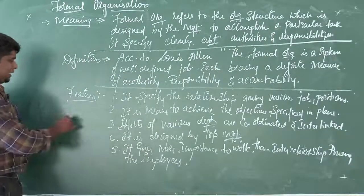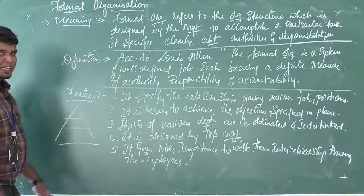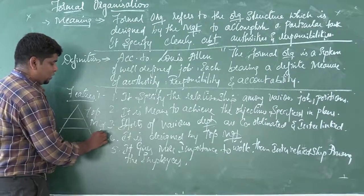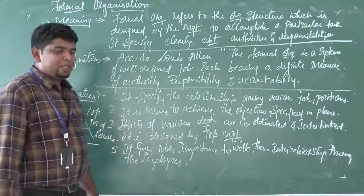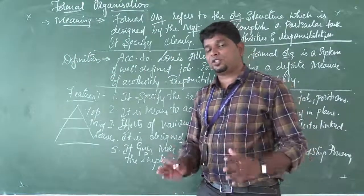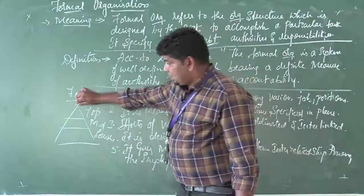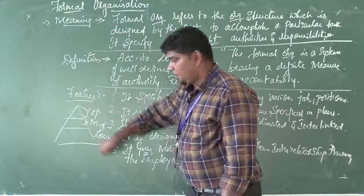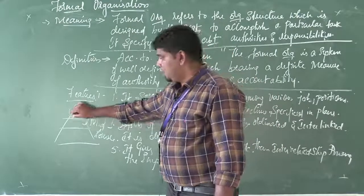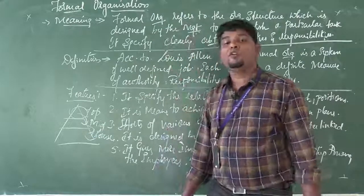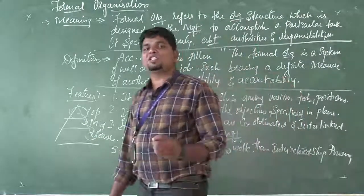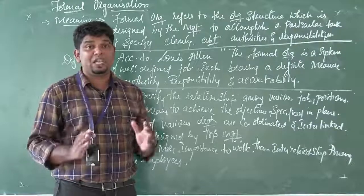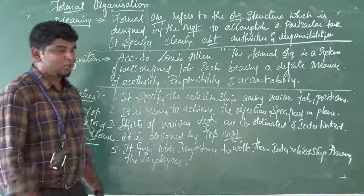Let me make a small chart. We have a top level, middle level, and low level — that is the supervisor level. There is a clear-cut message with clear-cut rules and regulations. Whatever directions are given by the top level management must be followed by the middle level, and what the middle level says the low level or supervisor level has to follow. This is called formal organization — it specifies clearly to whom you are responsible and what has to be done.